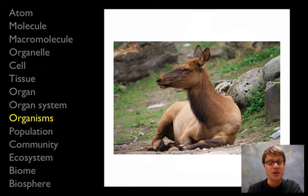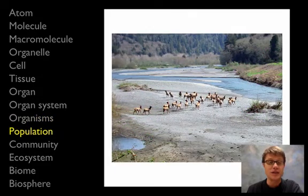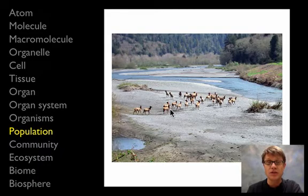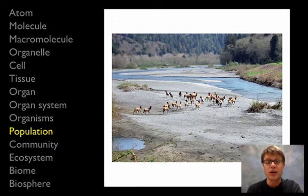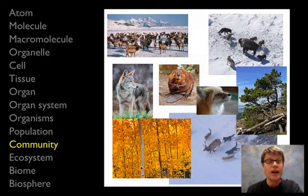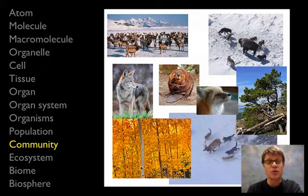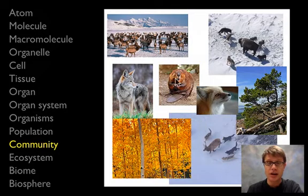Next we have an organism — this is called an elk. An elk is made up of a number of organ systems working together. Organisms are organized into a population, which would be all of the elk living in one area at a time. Once we have a number of different organisms living in one area, we have all these intraspecies interactions between bull elk and cow elk — that would be an emergent property at the level of a population. Next we have all of these different populations interacting together, which would be a community. It's all biotic at this point — living things — and we're going to have predation, competition, and parasitism: all these interactions between different populations at the level of a community.